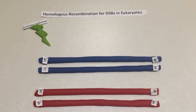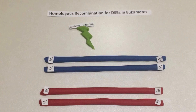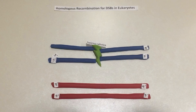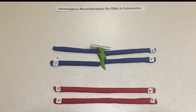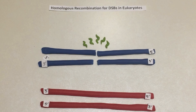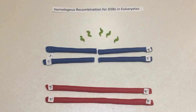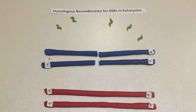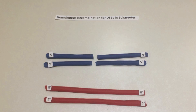Double-stranded breaks are caused by ionizing radiation in DNA strands. In the second step, the breaks are introduced and begin to be processed as single-stranded DNA.